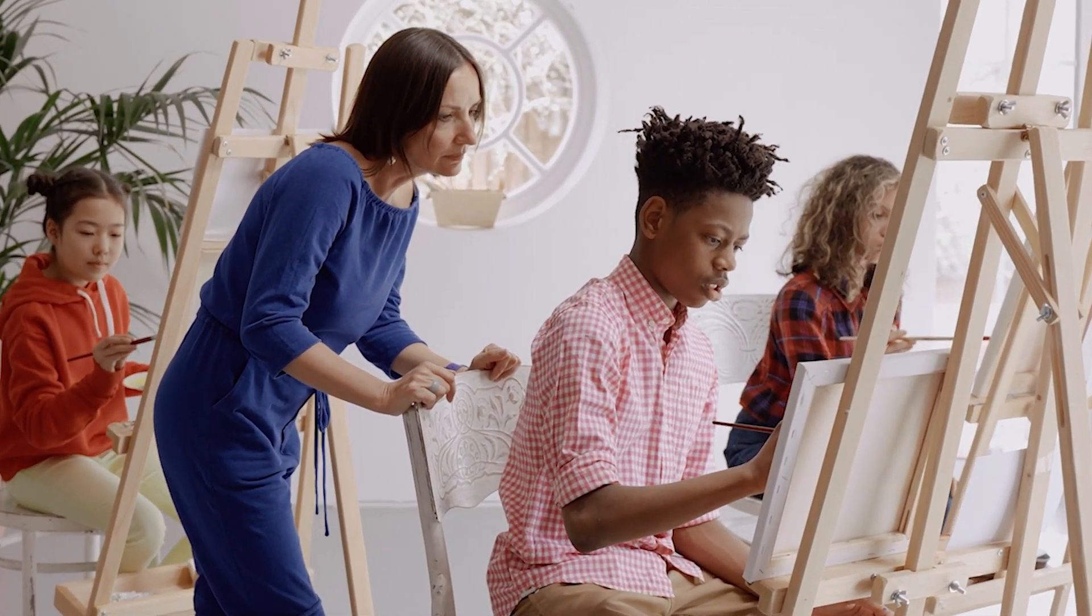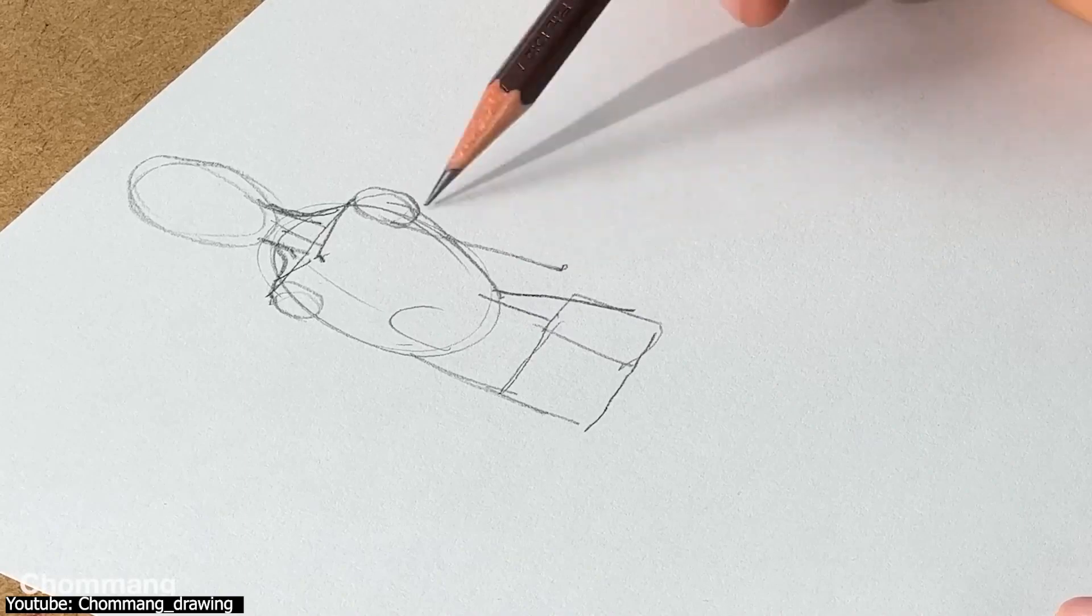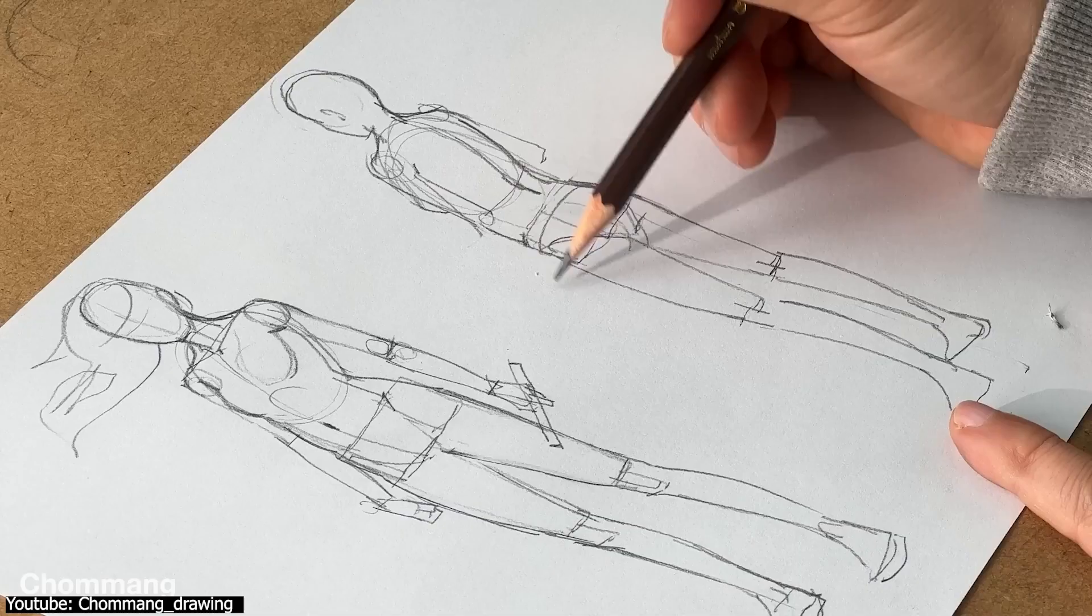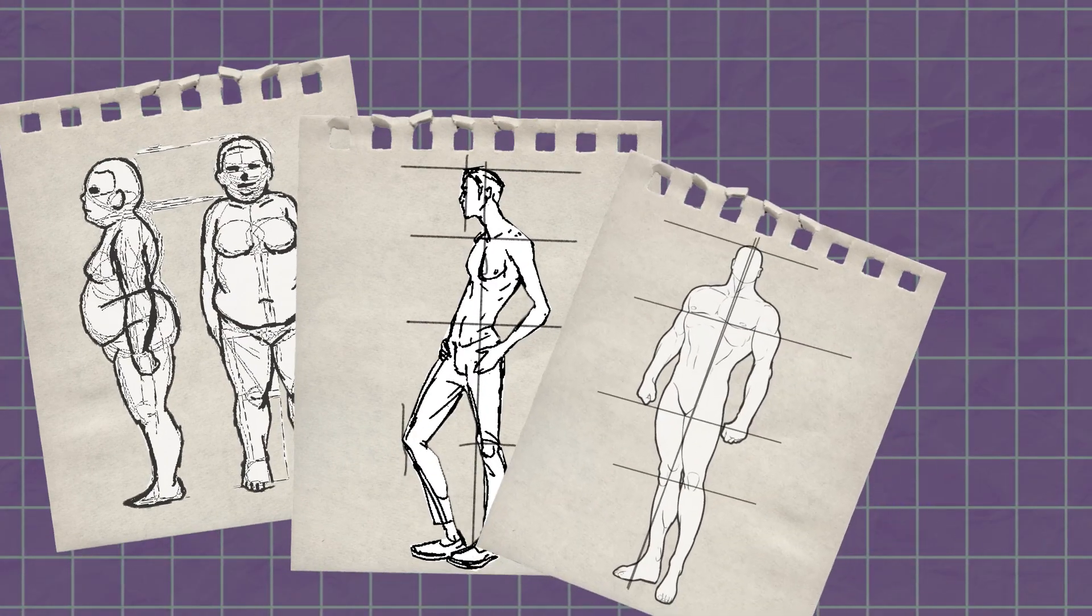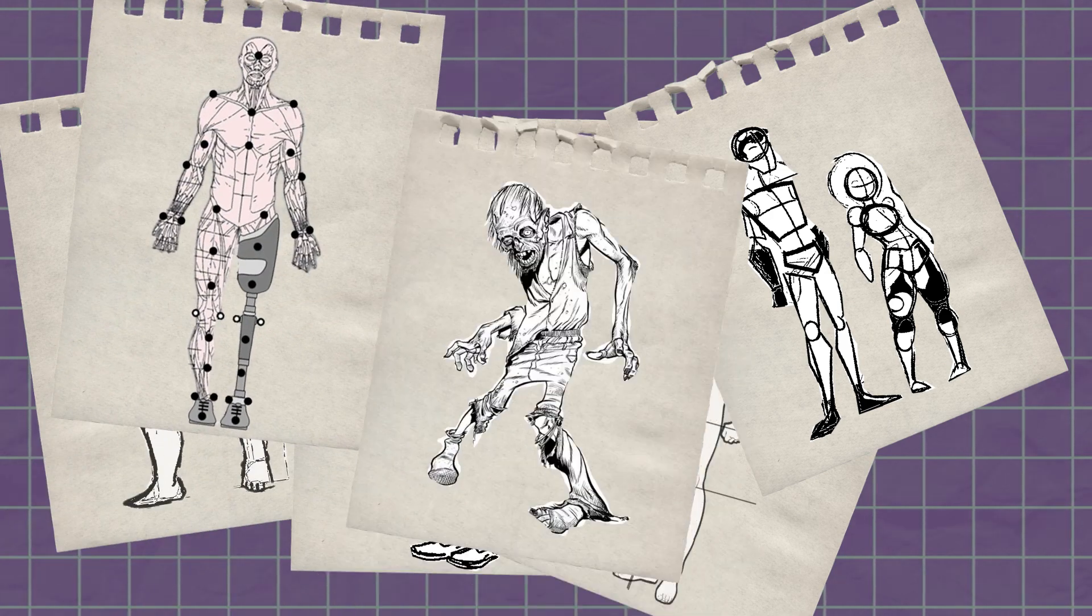Variation, on the other hand, is being able to draw different body types while still keeping them anatomically correct. A body can be fat, thin, muscular, short, tall, amputee, or even a zombie. Whatever you need to draw, you'll be able to do it.